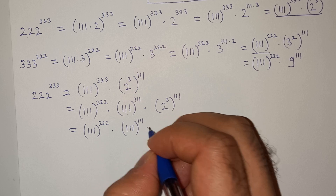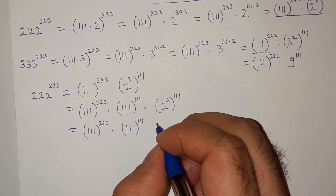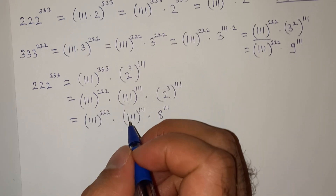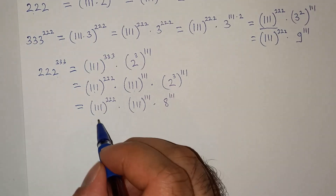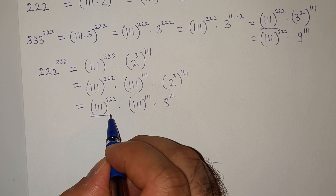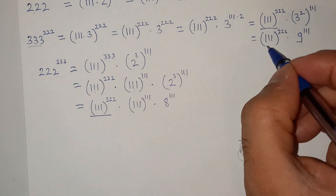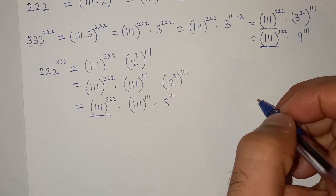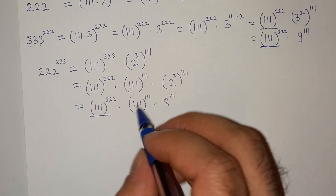So we see that in this term we have this term as common, and in this number we have this term as common. So basically we have to compare this number with this number and find out which one is greater.